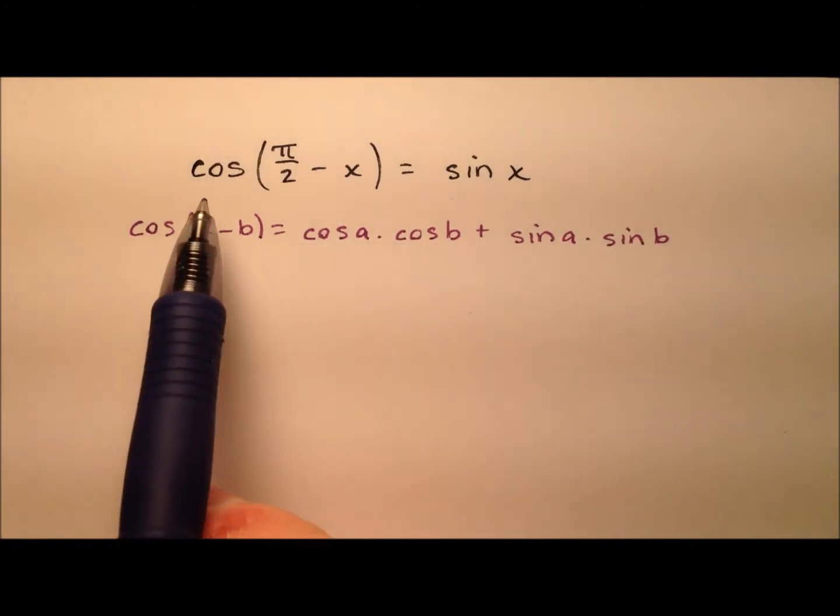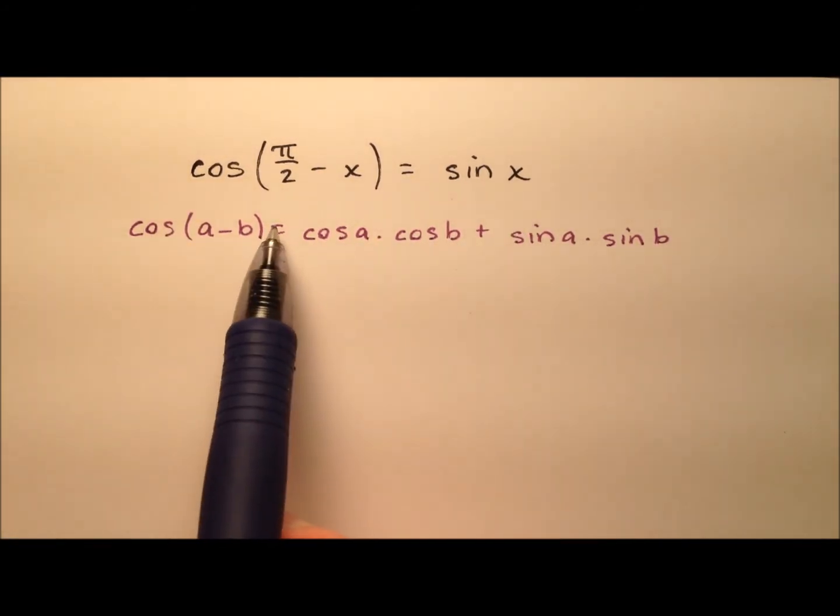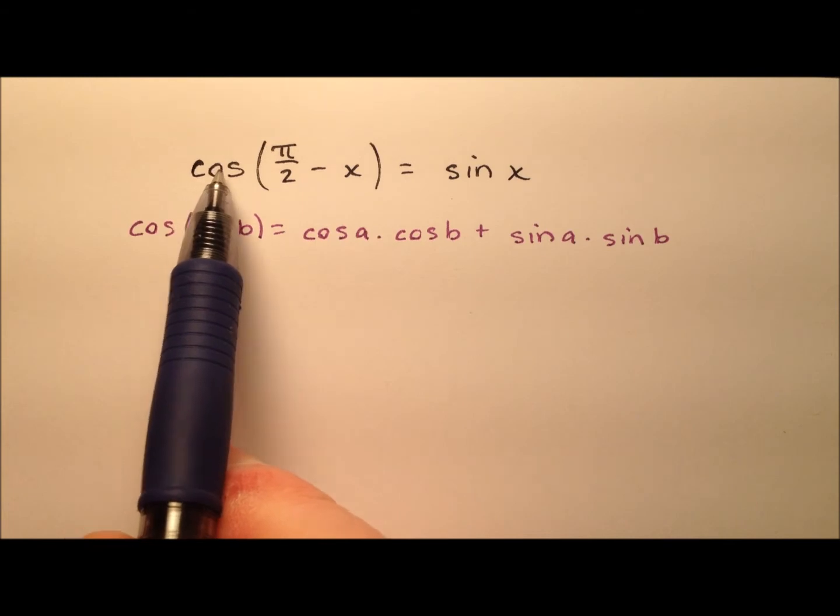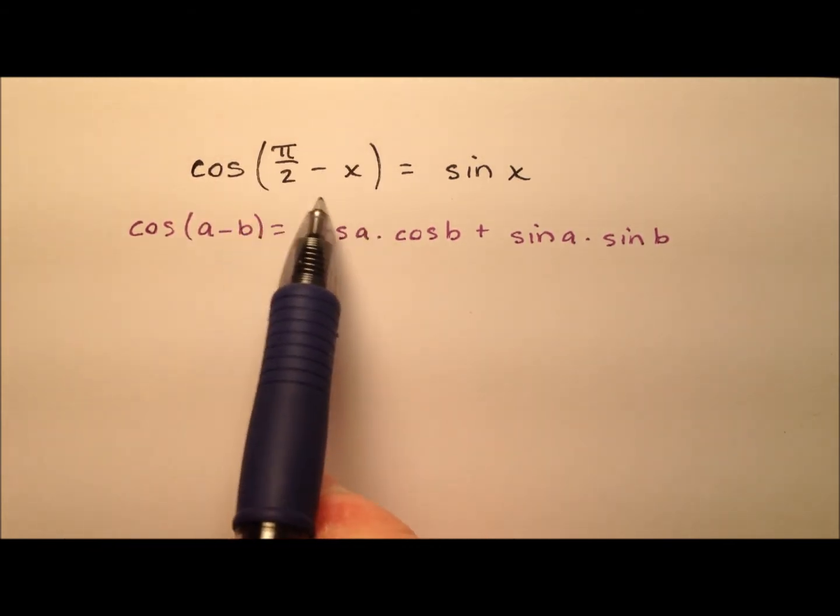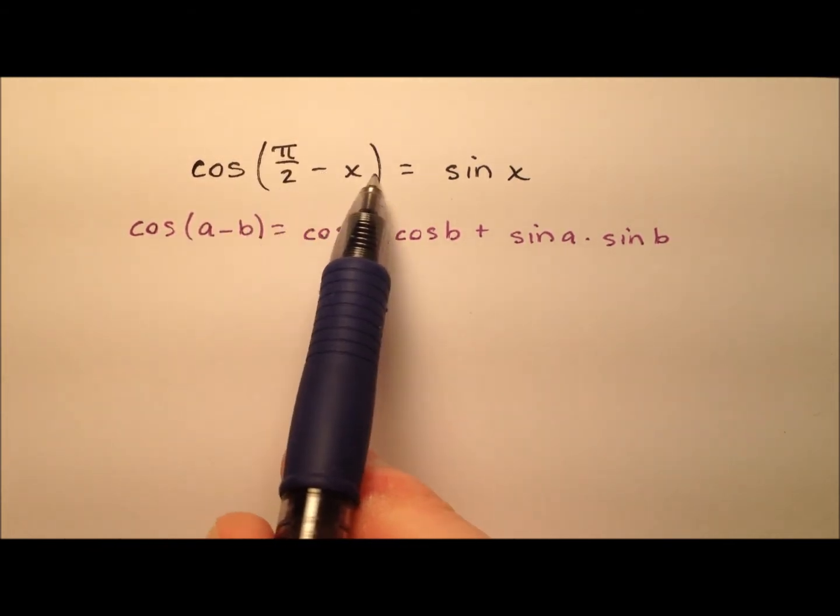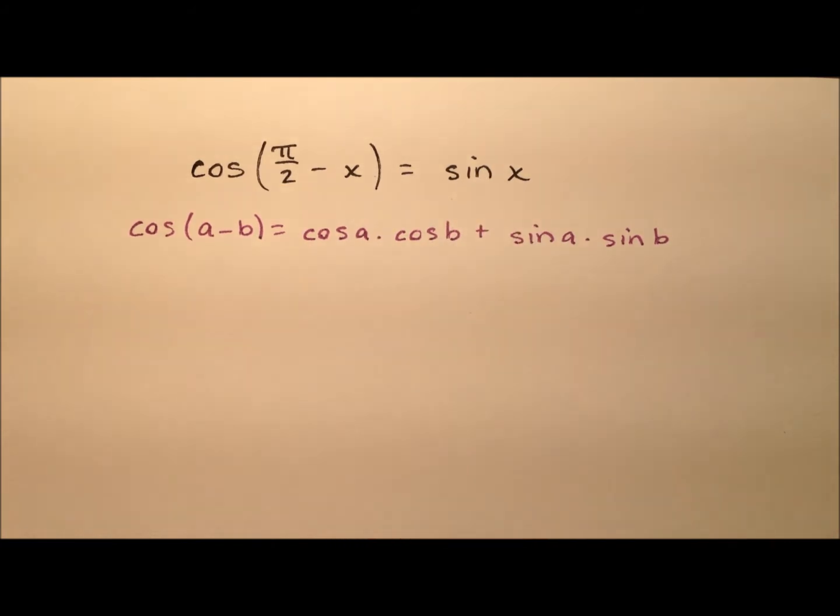In this example, we're going to verify this cofunction identity, which says we have the cosine of the difference of two angles, pi over 2 and x, and that's going to equal the sine of x.